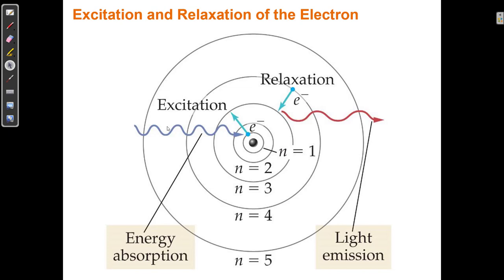Energy cannot be created or destroyed — energy just transforms. So energy comes in in some form and gets transformed. The electron goes out and now has more energy — it absorbed that energy. Now the electron falls back down and loses energy. Where does that energy go if it can't be destroyed? It leaves the atom in some other form — it leaves as heat or as light.